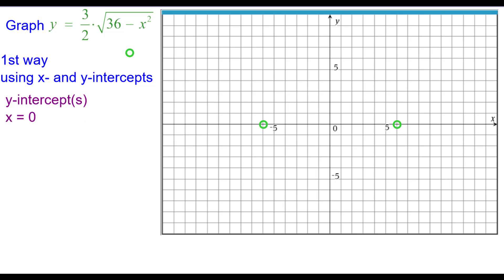Next we'll look at the y-intercepts, that occurs when x is equal to zero. So substituting zero for x, square root of 36 is 6 times three-halves is 9. So our y-intercept is at 0, 9.